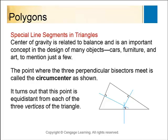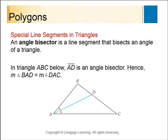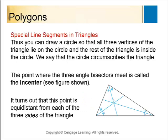Where the three perpendicular bisectors of a triangle meet is called the circumcenter. An angle bisector divides an angle into two equal halves — if you go exactly into the middle of an angle and draw a straight line to the opposite side, that's an angle bisector. When all three angle bisectors are drawn, the point where they meet is called the incenter, and the distance from the incenter to each of the three sides is exactly the same.